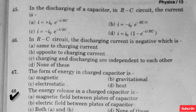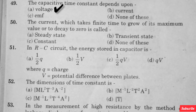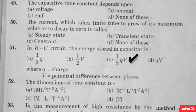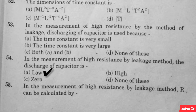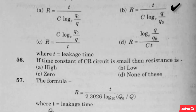The energy released in a charged capacitor is — option B is right. The capacitive time constant depends upon — option A is right. The current which takes finite time to grow to its maximum value or to decay to zero is called — option B is right. In RC circuit, the energy stored in capacitor is — option C is right. The dimension of time constant is — option D is right. In the measurement of high resistance, the method of leakage discharging of capacitor is used because — option B is right. In the measurement of high resistance by leakage method, the discharge of capacitor is — option A is right. R can be calculated by — option B is right. If time constant of CR circuit is small, then the resistance is — option B is right.